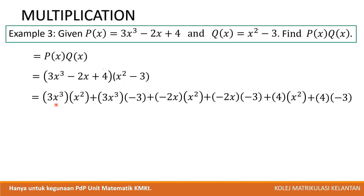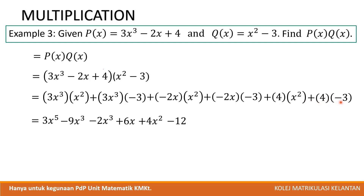The first term: 3x³ times x² — we add the powers of x, so the answer is 3x⁵. Then 3x³ times -3 gives -9x³. Then -2x times x² gives -2x³. Then -2x times -3 gives positive 6x. Then 4 times x² gives 4x². And 4 times -3 gives -12. This is not the final answer, because we have two terms with x³. So we simplify, and the final answer is 3x⁵ - 11x³ + 4x² + 6x - 12.